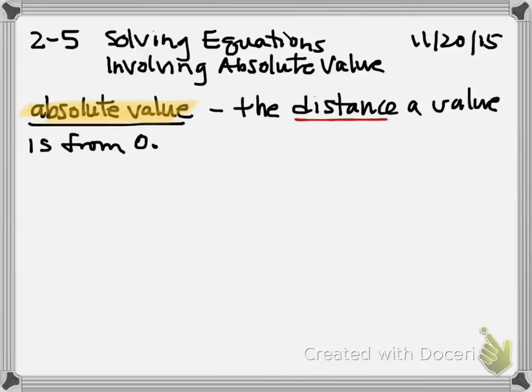So absolute value is simply the distance a value is from 0. So the key word is the word distance. When you think about a number line, you're not just talking about how far you are from 0. You're actually talking about in relation to 0, where are you? Are you to the right, which is positive? Or are you to the left, which is negative? So when we're talking about absolute value, we're just saying how far.